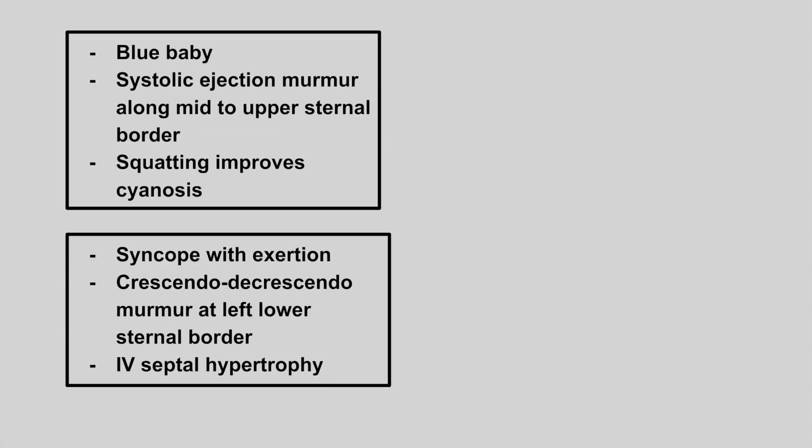The next one is a blue baby with a systolic ejection murmur along the mid to upper sternal border. Squatting will improve the cyanosis. This is tetralogy of Fallot. The systolic ejection murmur correlates to pulmonic stenosis.